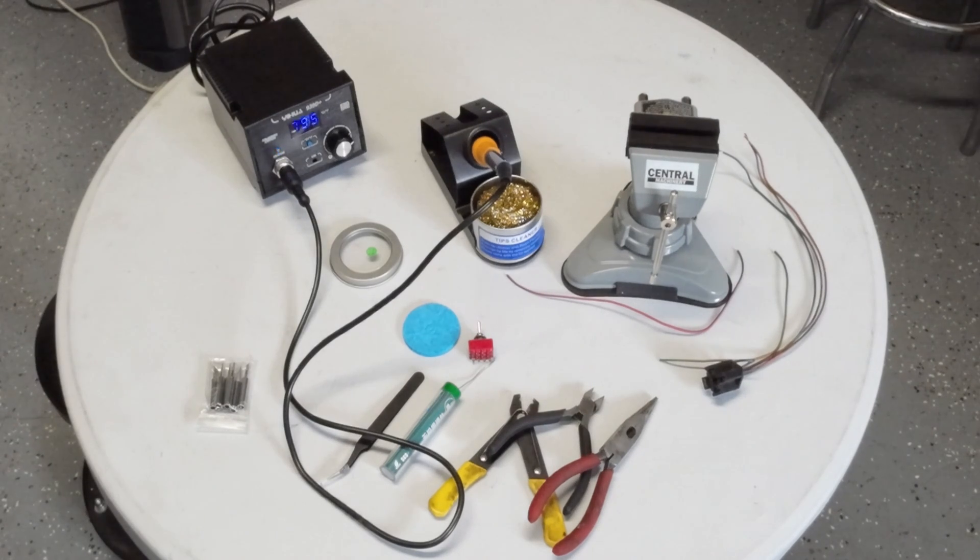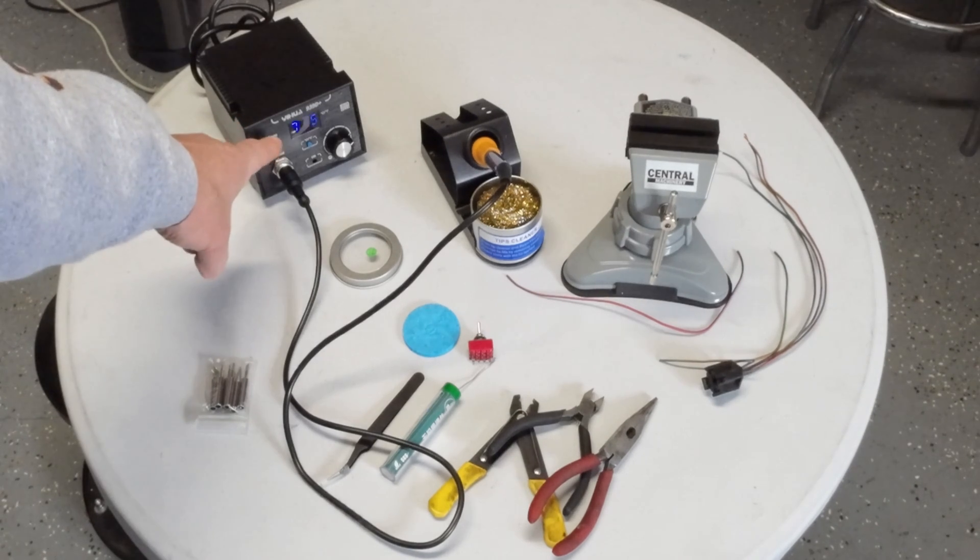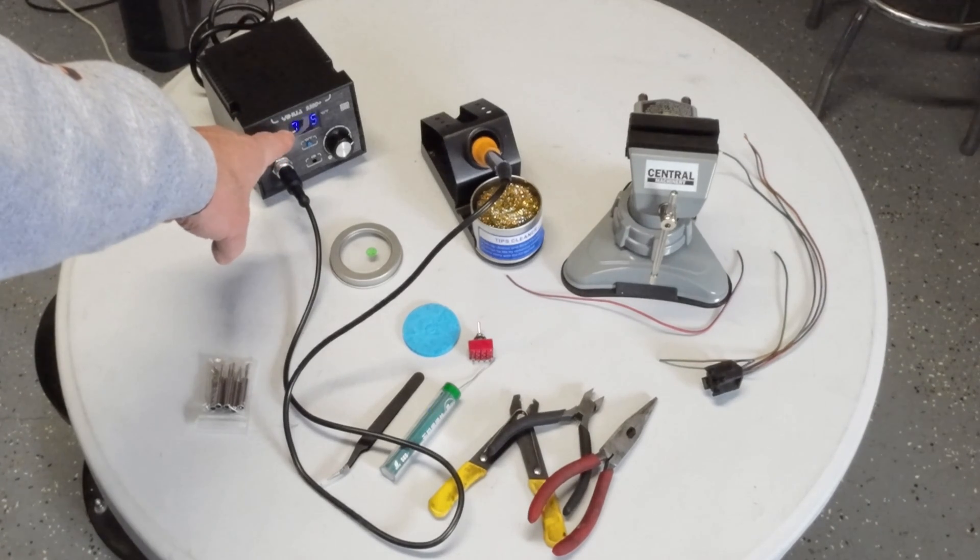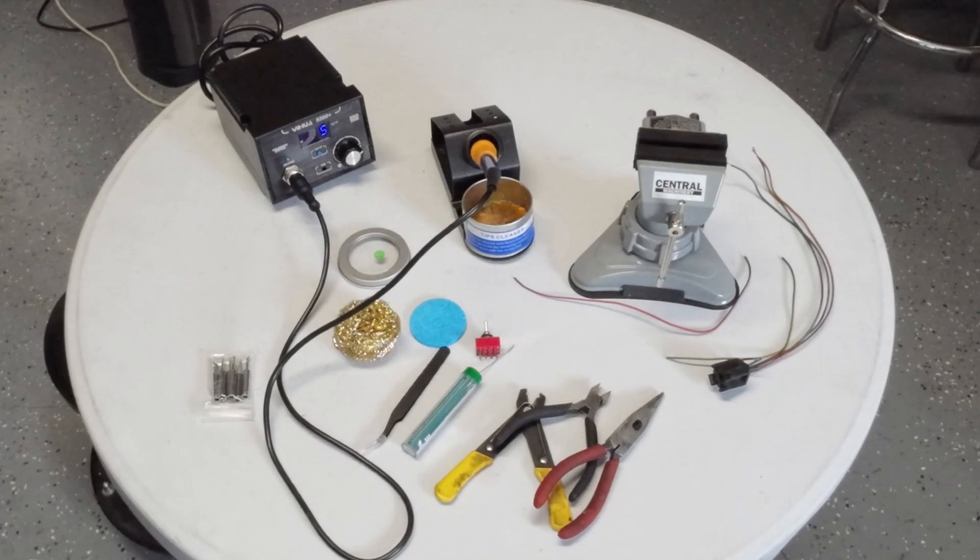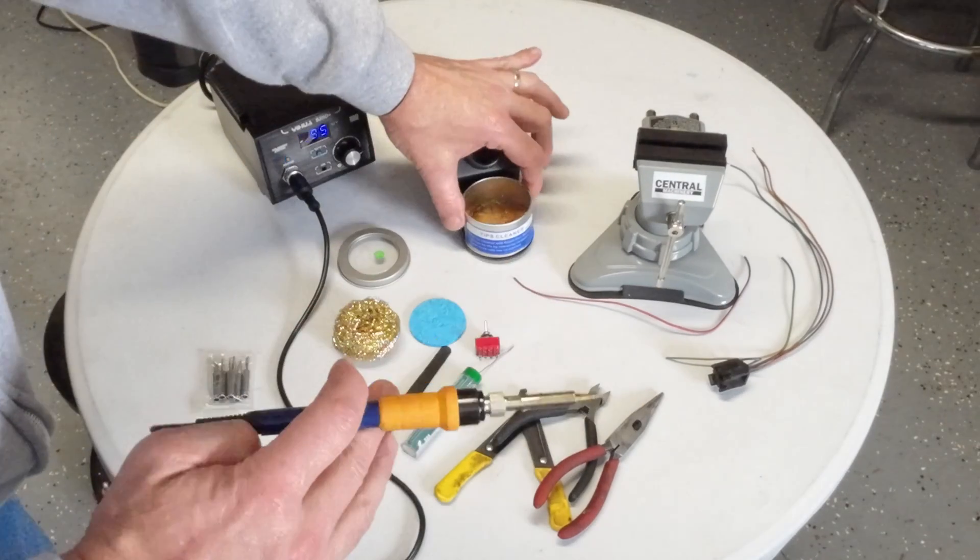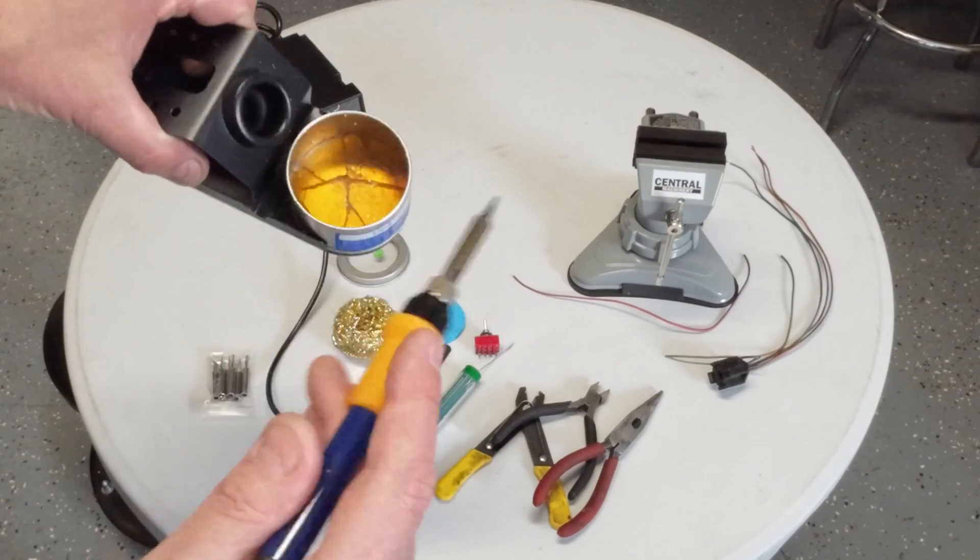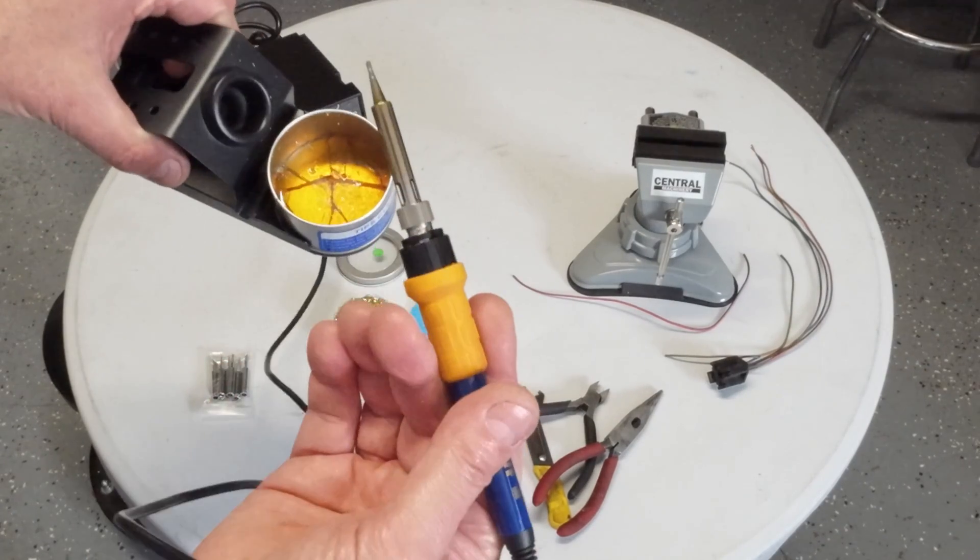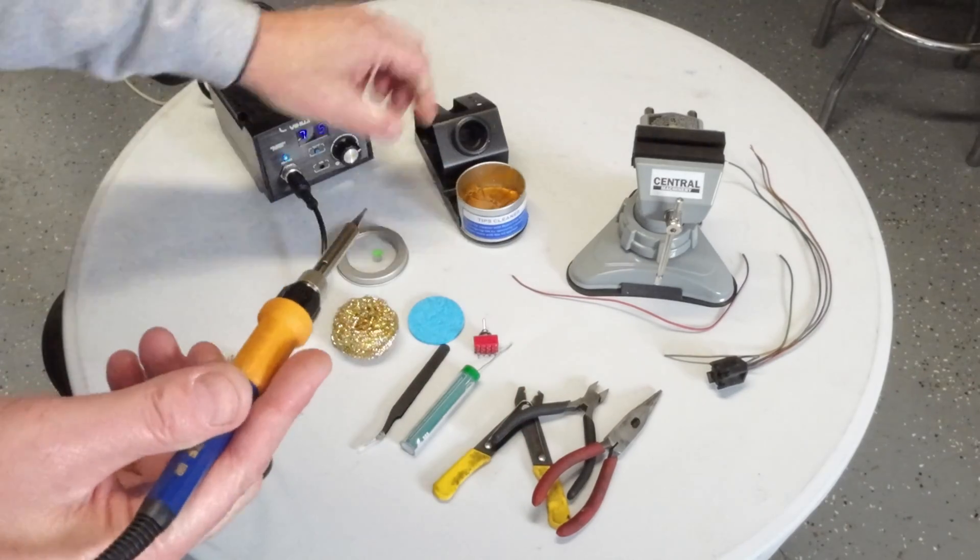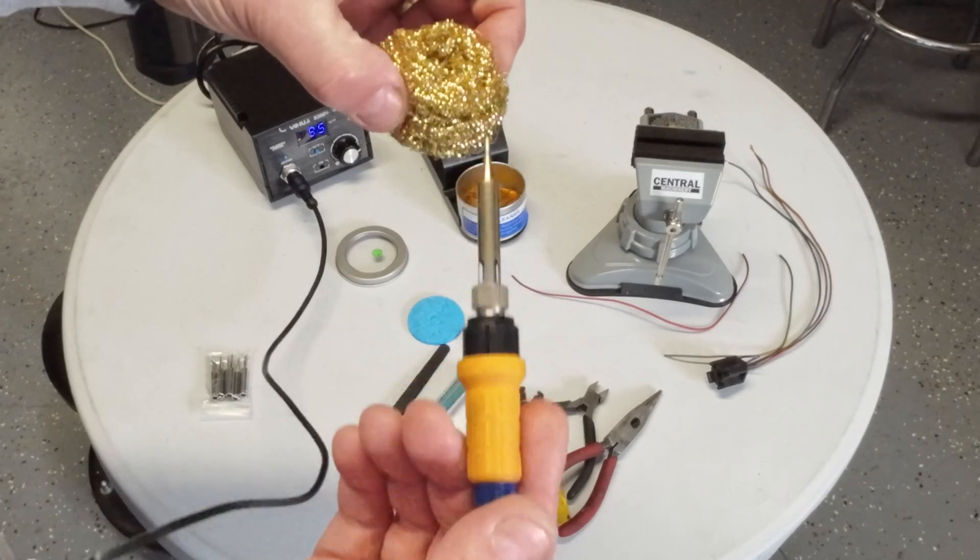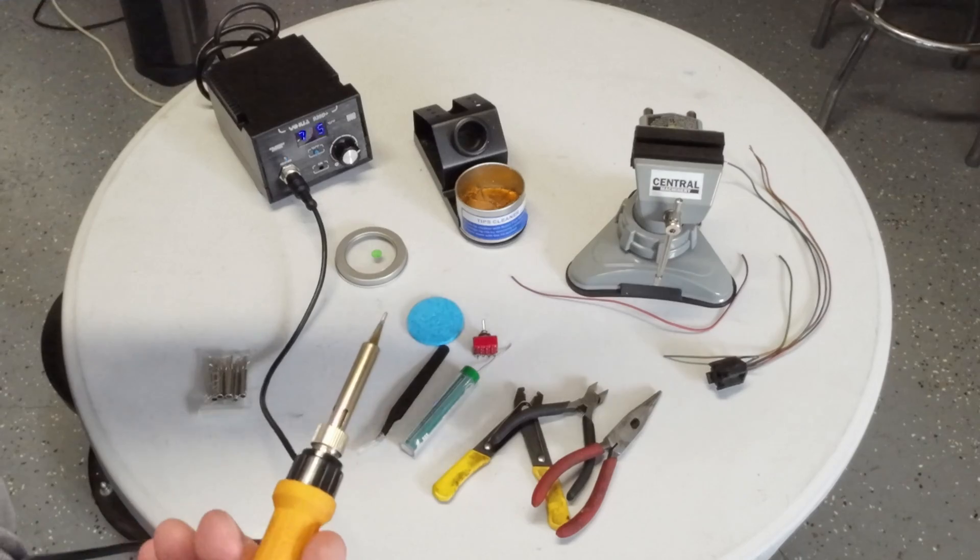You can see the temperature here is up to 795 degrees—that might be a little bit high. There's some flux in the bottom of this, and you could dip the hot solder tip into there to get it prepped. Flux does help. Then brush that off on the metal.